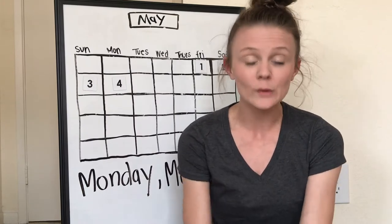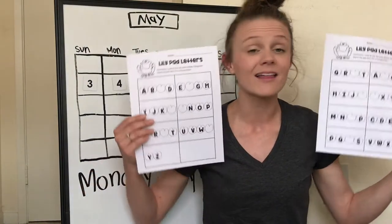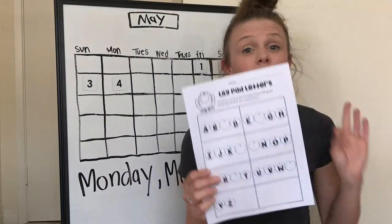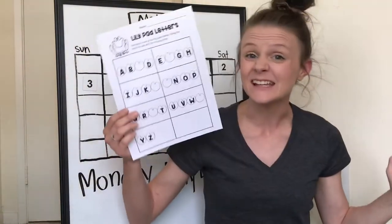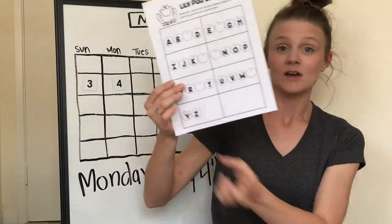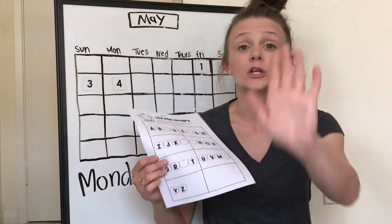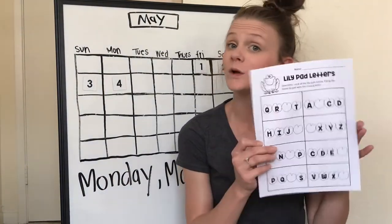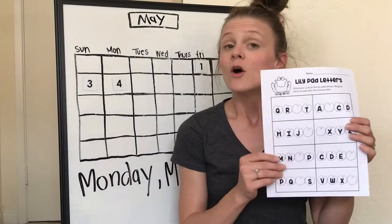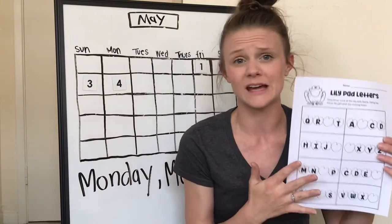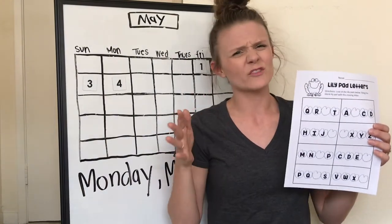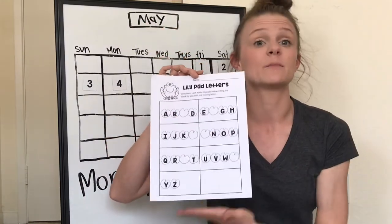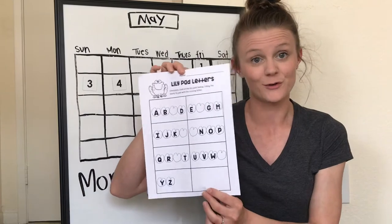Today I have made two different worksheets. Lily pad letters is what they're called. One of our worksheets starts with letter A and ends with letter Z. This is a worksheet I want you to do if you are struggling a lot. We're going to do the harder one together, but if after we do it together you feel like it was too hard, you should go back and do the A-to-Z one, because that one is something all of us should be able to do.